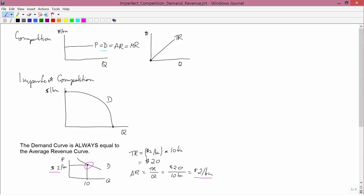Therefore, in the imperfect competition graph, I can label demand equal to average revenue, because demand is always equal to average revenue. Now, that's true in competition as well.